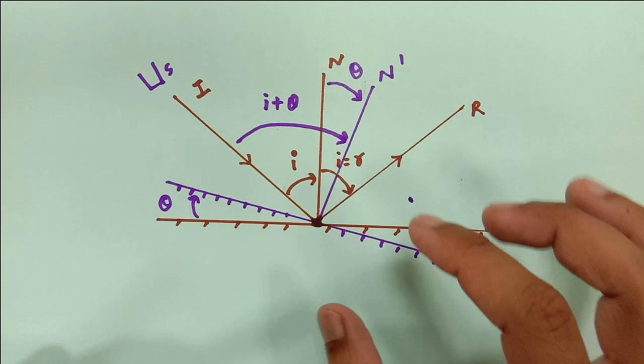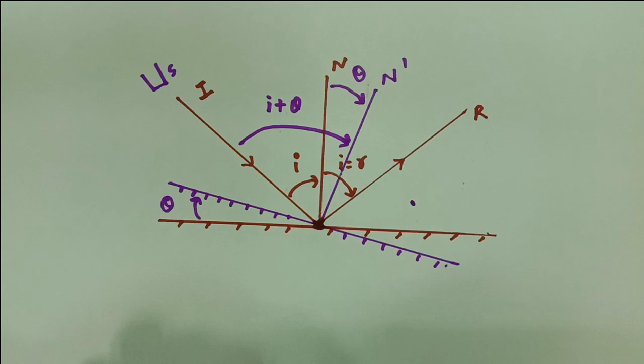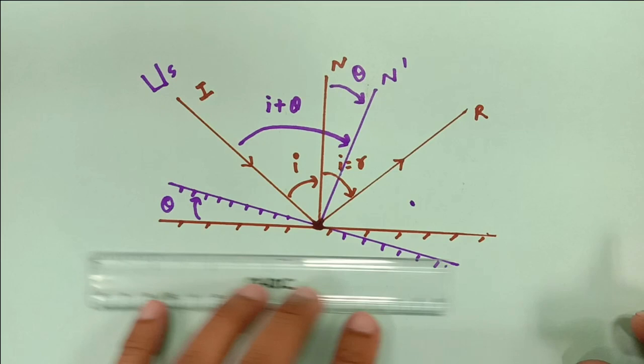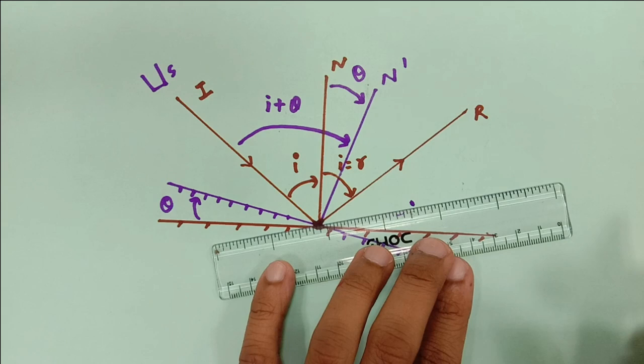The diagram may not be very accurate in terms of angles, but if this angle is I plus theta, then this angle must also be I plus theta from here. So let me draw this ray again.